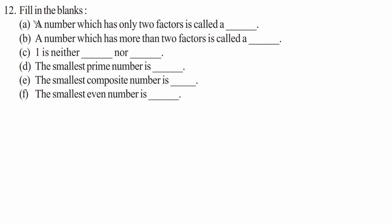Question twelve: fill in the blanks. A number which has only two factors is called a prime number. A number which has more than two factors is called a composite number. One is neither a prime number nor a composite number. The smallest prime number is 2. The smallest composite number is 4. The smallest even number is 2.